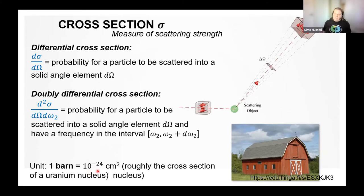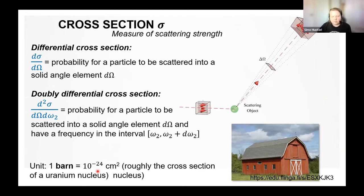The name 'barn' comes from the Cold War era, when the probability for fission to happen due to a neutron hitting a uranium nucleus was being discussed. Somebody said it's very difficult because the uranium nucleus is so small, but then somebody argued: look, it's as big as a barn — you cannot miss it. So you will hit it. The cross section of 10 to the minus 24 square centimeters is large enough for our scattering and absorption experiments to work out.